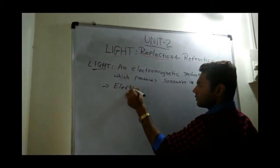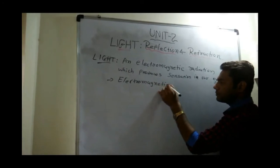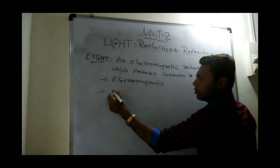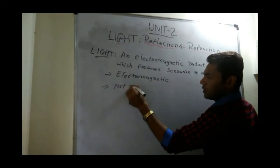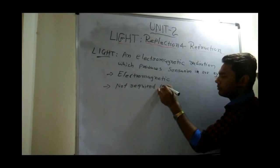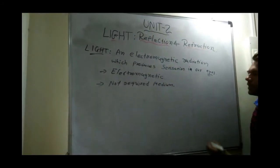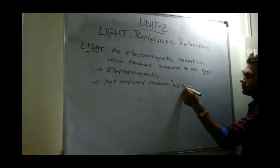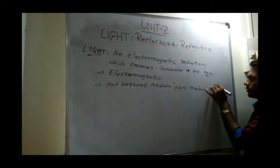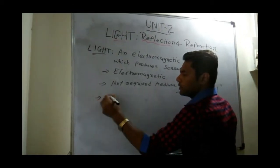Light is an electromagnetic wave. Another important point is that light requires no medium — it does not require any medium. So we can say light wave is a non-mechanical wave. First point: electromagnetic wave; second point: non-mechanical.